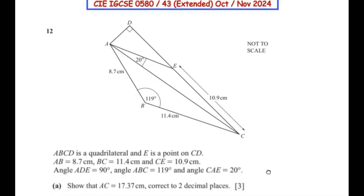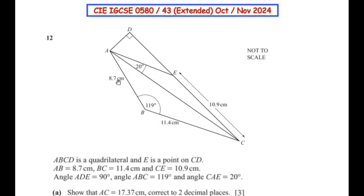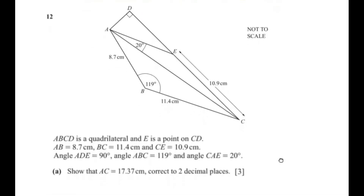The first question is to show that the length of AC is equal to 17.37 cm, correct to two decimal places. We can see that a quadrilateral is given with some side lengths and angles. In the first sub-question we have to find the length of AC, so let us consider triangle ABC and redraw that triangle.